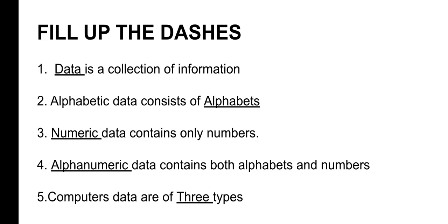Third blank: numeric data contains only numbers — no alphabets. Addition, multiplication, subtraction, division — all these are numeric. Fourth blank: alphanumeric data contains both alphabets and numbers together, like 'Five Star' chocolate which has the number 5 and the word Star.